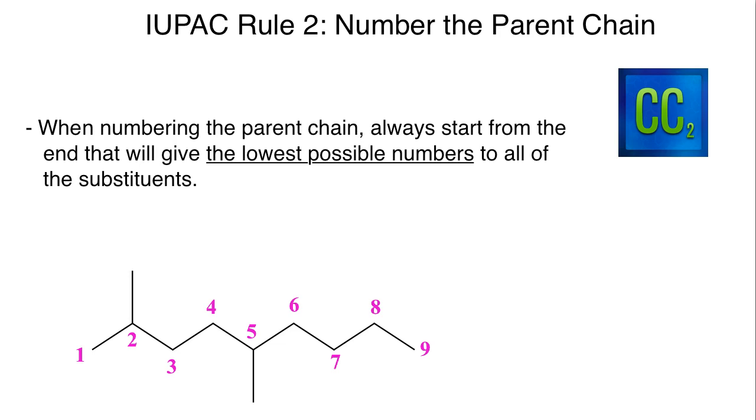Now we have to start at one end versus another when we get ready to number these, so you cannot start numbering in the middle of your parent chain in order to give the lowest possible numbers. You have to go to one of the terminal ends and assign numbers starting from there, and you move along the parent chain and you number it until you get to the other end. The substituents that are there, you take a look at the numbers, and if they have the lowest set of numbers possible, then that is the correct numbering system for that chain.